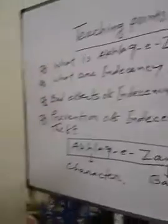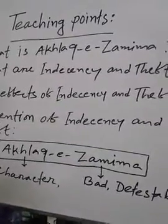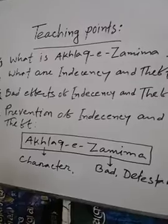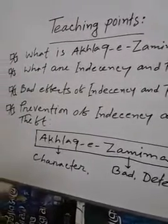First, I have to tell a story. Then you will guess which topics we are going to discuss today. One boy named Nabil used to tell lies, vulgar words, and shameful words. On the other hand, he used to take away something from others without his or her knowledge. Can you guess what types of topics we are going to discuss today? I think you have already identified them. Today I am going to discuss Akhlaq-e-Zamima.